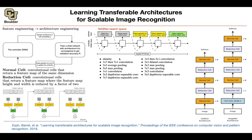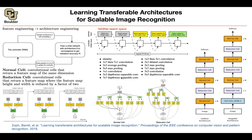The available operations the RNN can choose from include: identity, 1×7 then 7×1 convolution, 3×3 convolution, 5×5 convolution, 3×3 max pooling, 5×5 max pooling, 3×3 depthwise separable convolutions, 5×5 depthwise separable convolutions, dilated convolutions, 3×3 average pooling, and others. Once the RNN is trained, it proposes an optimal architecture for both the normal cell and the reduction cell.